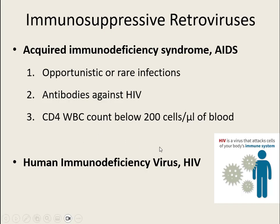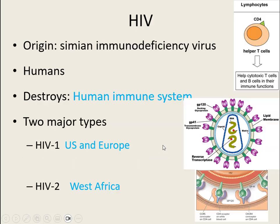The virus causing this is the Human Immunodeficiency Virus, HIV. The origin of this virus is the simian immunodeficiency virus — simians are monkeys. At some point that virus slightly changed through interaction between monkey and human, and now humans have their own human immunodeficiency virus.